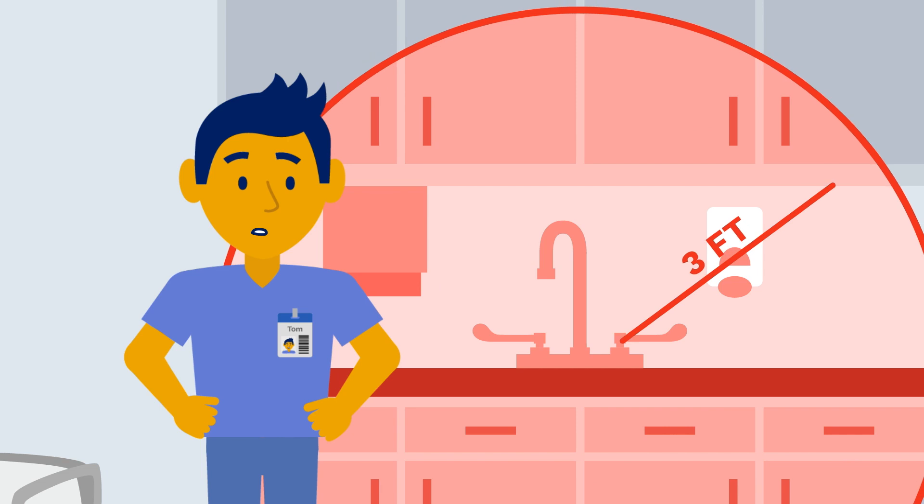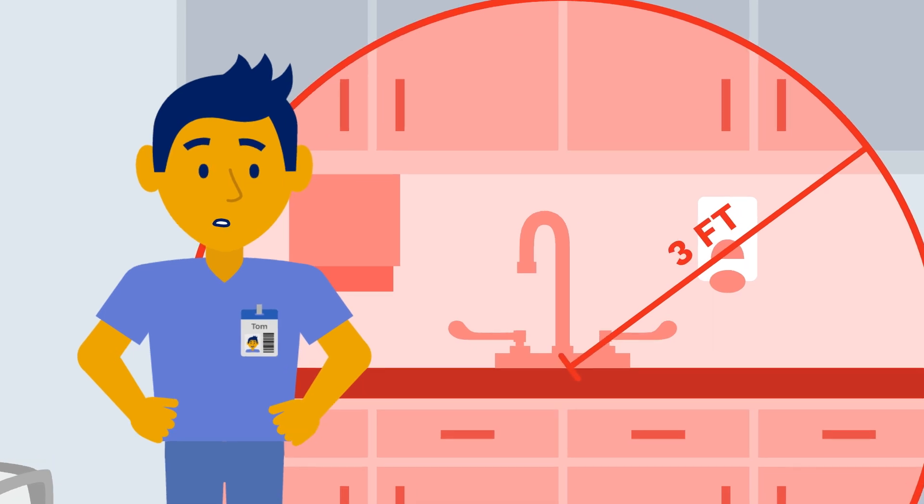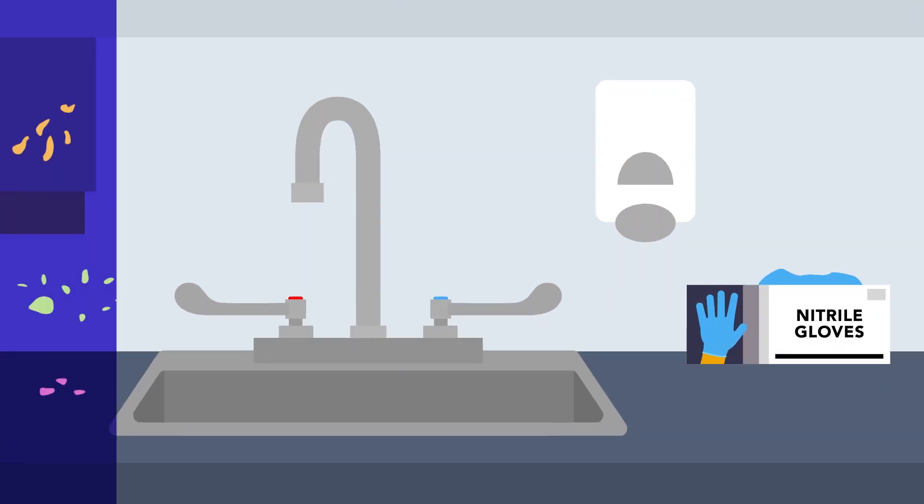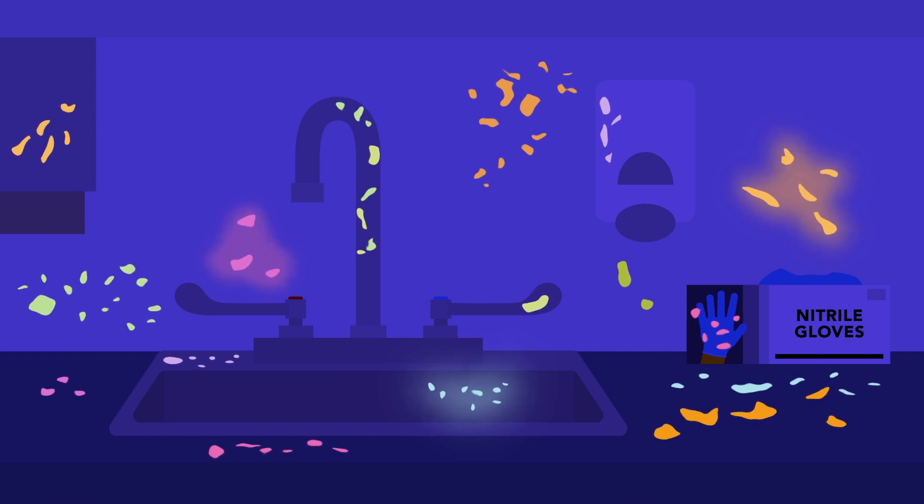The Splash Zone is the three-foot area surrounding a sink. In this area, there is a higher risk of coming into contact with infectious agents that can spread disease.